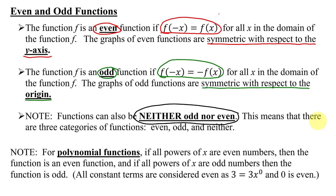This means that there are three categories of functions: even, odd, and neither. In the first video, I just looked at polynomial functions, and for these functions, if all powers of x are even numbers then the function is an even function, and if all powers of x are odd numbers then the function is odd.